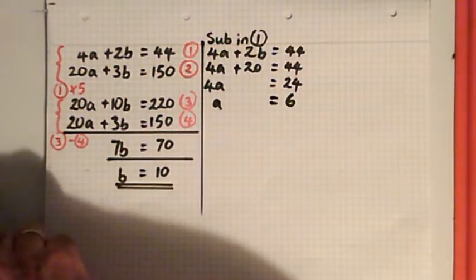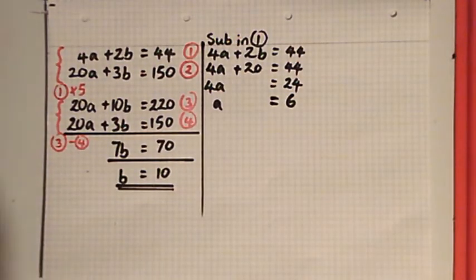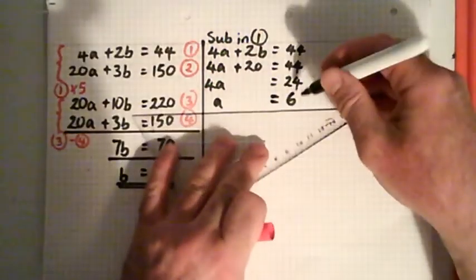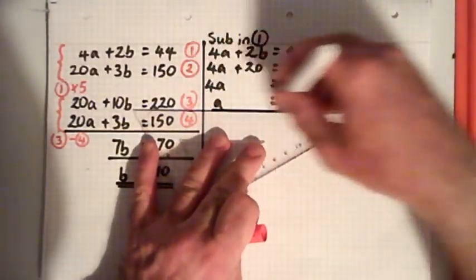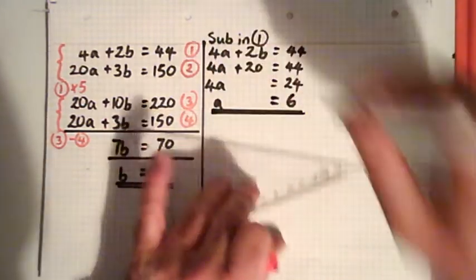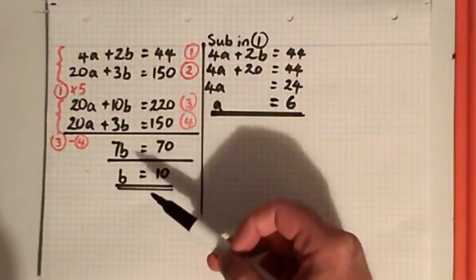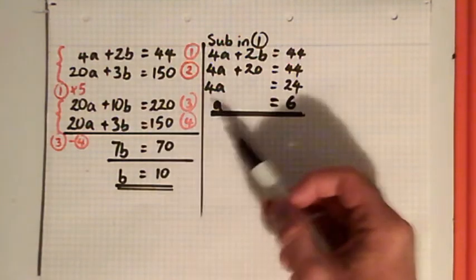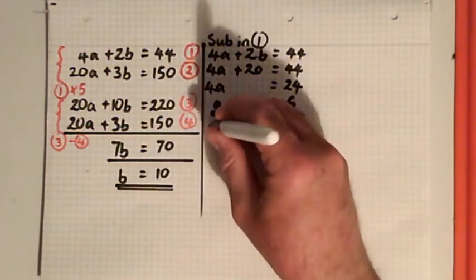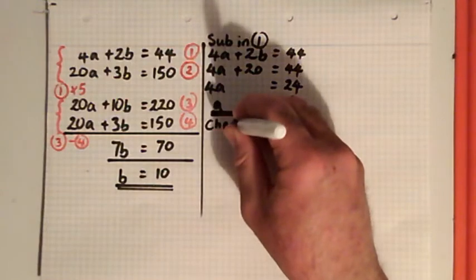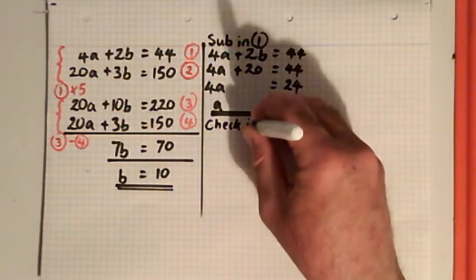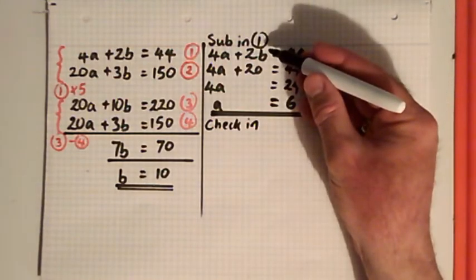So if this was an exam question, we'd get the marks for a = 6 and b = 10. It's a good idea with these to check your answer. I used equation 1 before, so if I made a mistake, I might make the same mistake again.